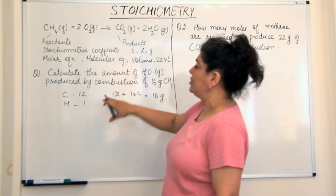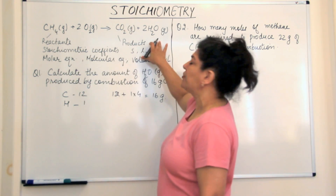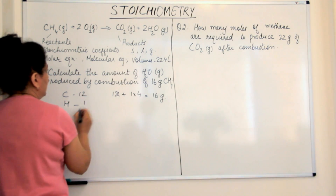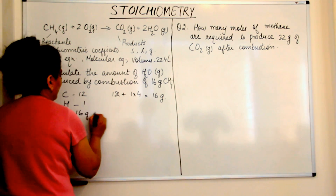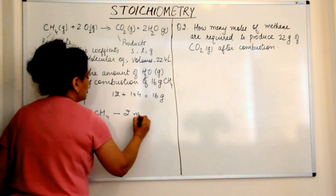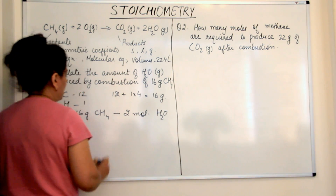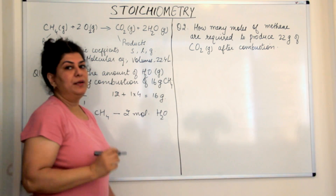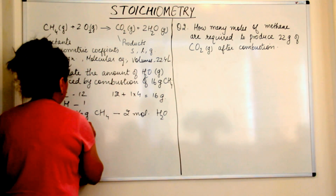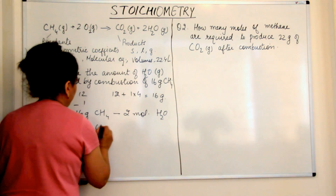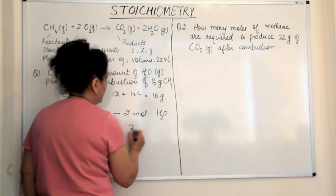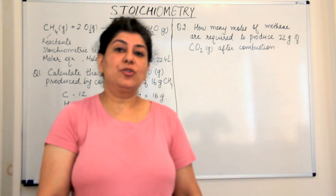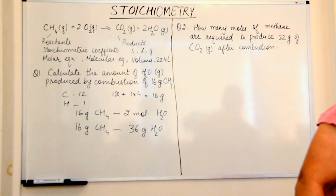According to this balanced chemical equation, when you have 1 mole of methane, 2 moles of water are produced. So the stoichiometry tells us that for 16 grams of methane, 2 moles of water would be produced. The mass of water: oxygen has mass 16 and hydrogen has mass 1, so water (H₂O) has mass 18. Therefore 2 moles of water is 2 × 18 = 36 grams. So 16 grams of methane produces 36 grams of water. This is how we calculate using stoichiometry.